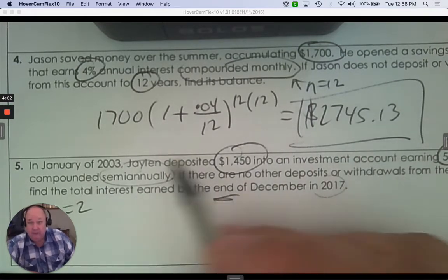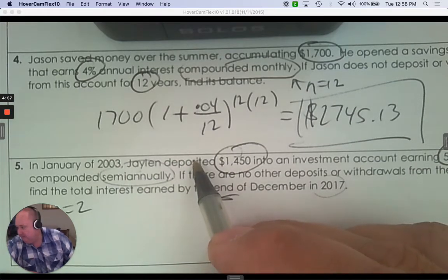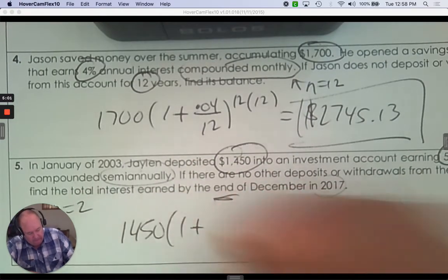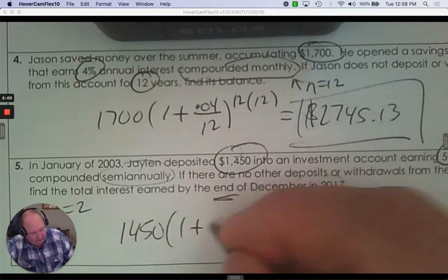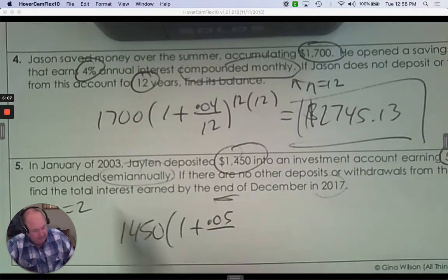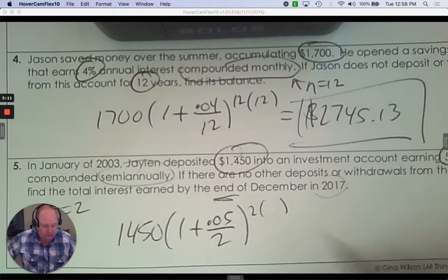So he went from the beginning in January to the end. I know I'm starting with $1,450. The interest rate as a decimal is .05. Semi-annually means twice a year. So the only tricky part is how many years that is.